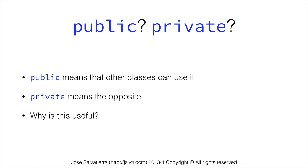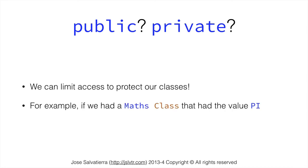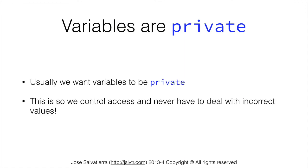Why is this useful? We can limit access to protect our classes. We can use public and private not only in methods but also in variables. Imagine we have a maths class that holds the value of pi — we don't want any other program to go to our class and change the value of pi, so we make it private so that no one else can change that value. Variables are usually going to be private so that we can control access and never have to deal with incorrect values. If our variables are private, there's no way the value of our variable is going to be incorrect, so we don't even have to check about it.